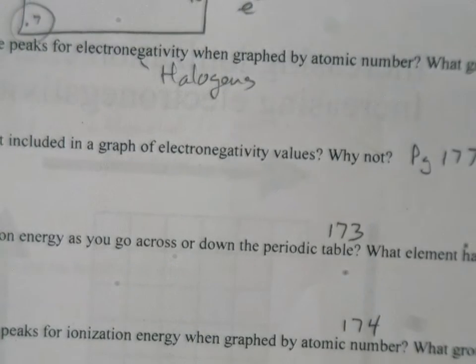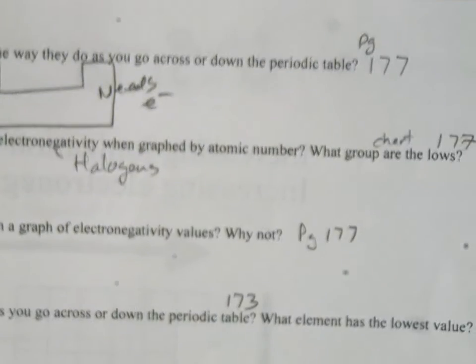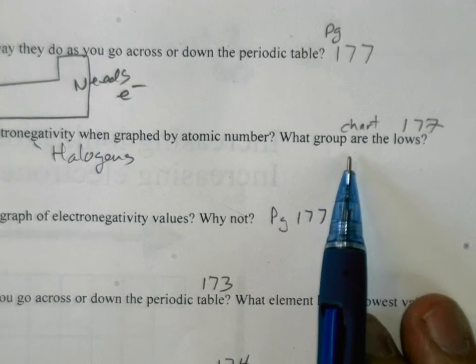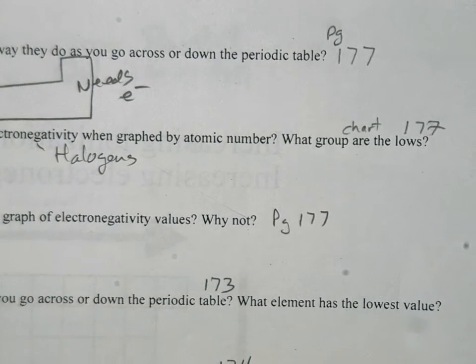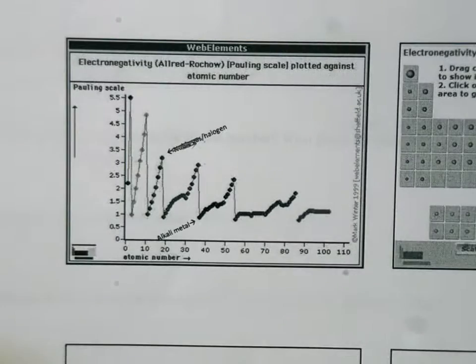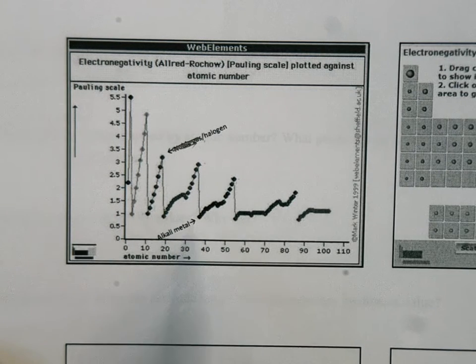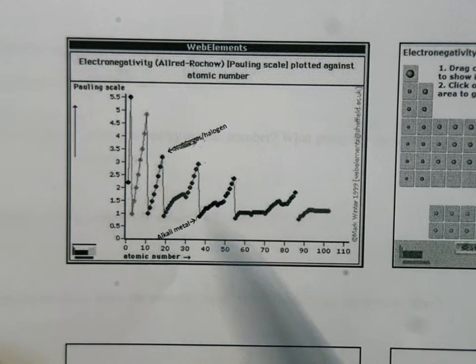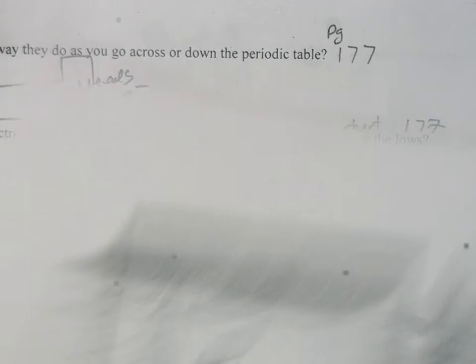What group are the lows for electronegativity? The lows are going to be the alkali metals. The alkali metals want to get rid of electrons — they don't want to share electrons, they just get rid of them. So the alkali metals will always be low whether it's electronegativity or ionization energy.